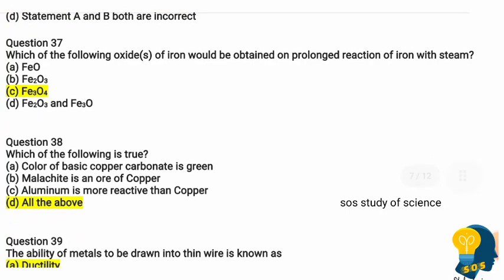Question 37: Which oxide of iron would be obtained on prolonged reaction of iron with steam? You have learned about the action of steam on metals in this lesson. The correct answer is ferric oxide.